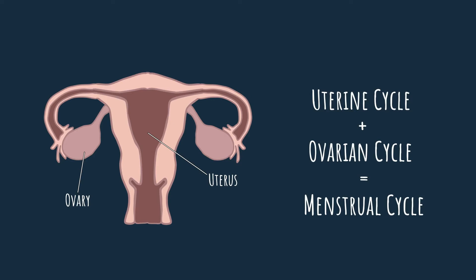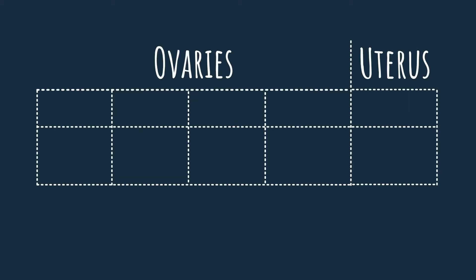So we're going to cover the hormonal regulation and changes of both the ovaries and the uterus. In this first video we're just going to go over the basics to get a general understanding of the cycle. First we need to cover the main events that occur during the menstrual cycle. In the ovaries, or during the ovarian cycle, there are three main events: follicle maturation, the ovulation of the oocyte, and the formation of the corpus luteum.